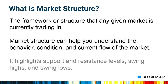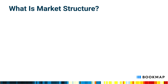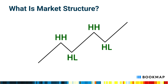It highlights support and resistance levels, swing highs and swing lows. There are three broad types of structure within the market. Bullish market structure involves a sequence of higher highs and higher lows, forming an uptrend.